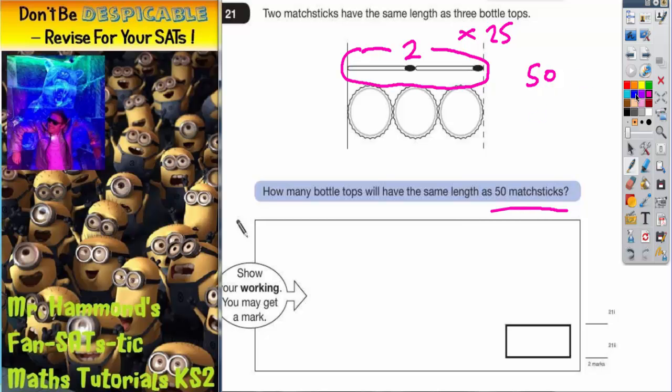So what we've got to do is do exactly the same to the bottle tops. Take our three bottle tops and times that by 25 because we're making the whole diagram 25 times bigger. So three lots of 25 is 75, and that is actually the final answer. There will be 75 bottle tops.